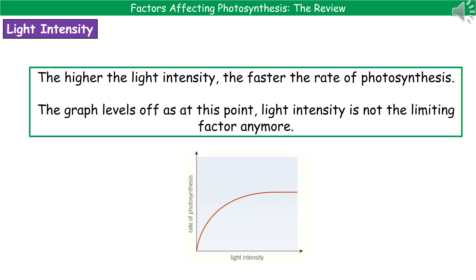If we take our first factor of light intensity, what we actually find from the graph of rate versus light intensity is that in the initial period, the higher the light intensity, the faster the rate of photosynthesis. But as we keep increasing light intensity, eventually we hit a point where it levels off. That's down to the fact that light intensity is no longer the limiting factor. You'll always see that exact same shape of graph when looking at light intensity affecting photosynthesis.